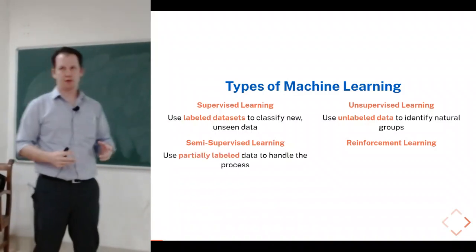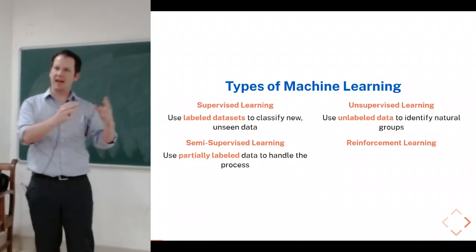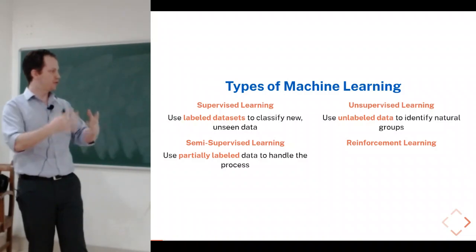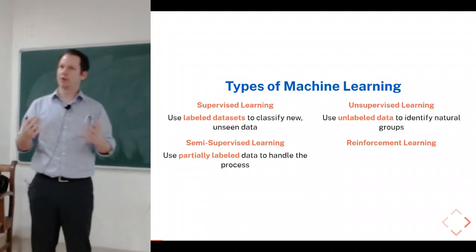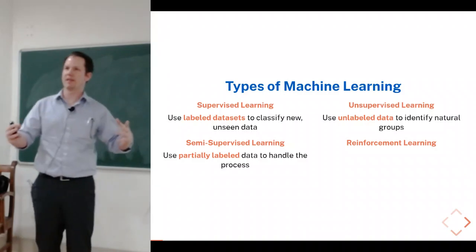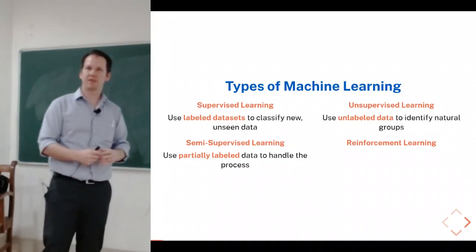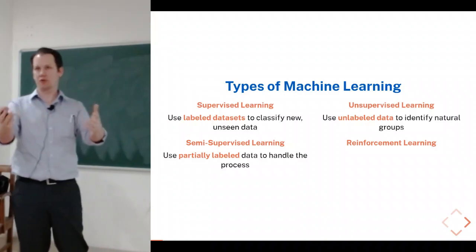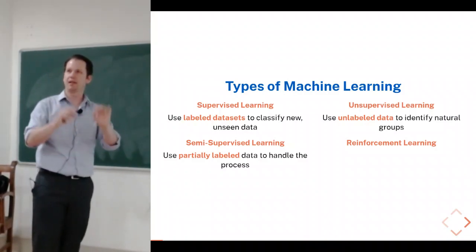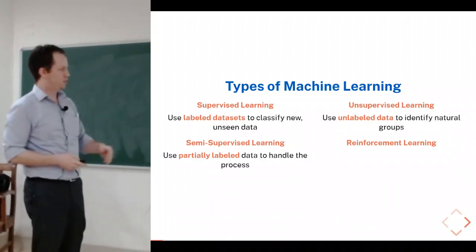In semi-supervised learning, you combine the two approaches — some data has labels and some doesn't. This is very useful if labels are expensive to get. If each label is tough to acquire but you can collect data quickly, you label some of the dataset and use that to build a model. That's called semi-supervised learning.